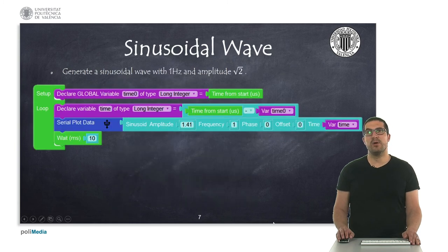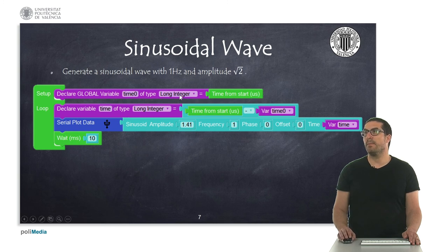Finally, in this example, we are measuring the time at the startup. This is a variable we call it time 0, and then on each iteration, we measure the current time relative to this previous time. We always measure the time, and we get that time, and we put it here as part of the arguments that we need to evaluate the sinusoidal wave.